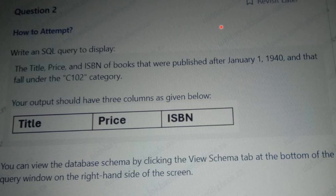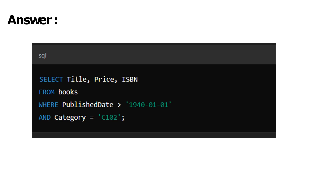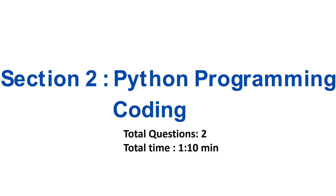In the exam they provided a schema, but unfortunately for this question I don't have it. This is the sample answer for the second SQL query question: SELECT title, price, isbn FROM books WHERE published_date is greater than the given date AND category = 'C102'. Here, books is the table name.